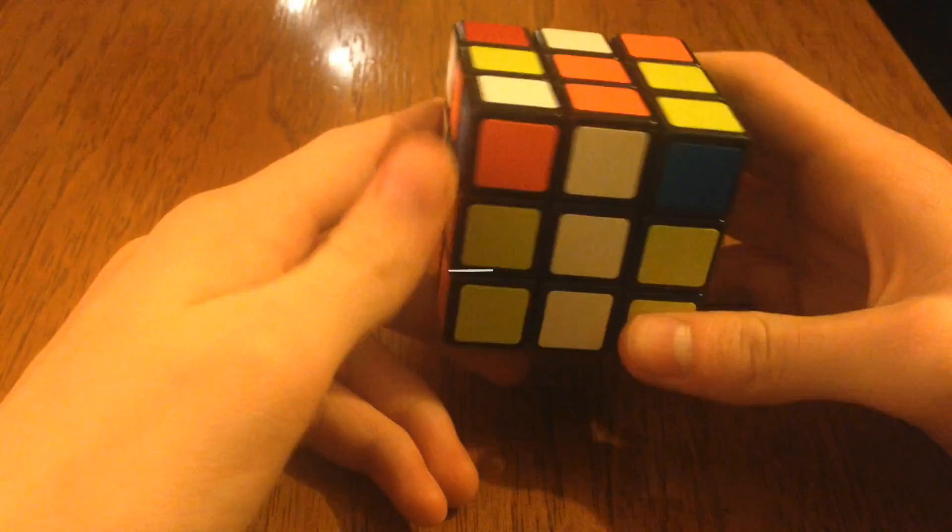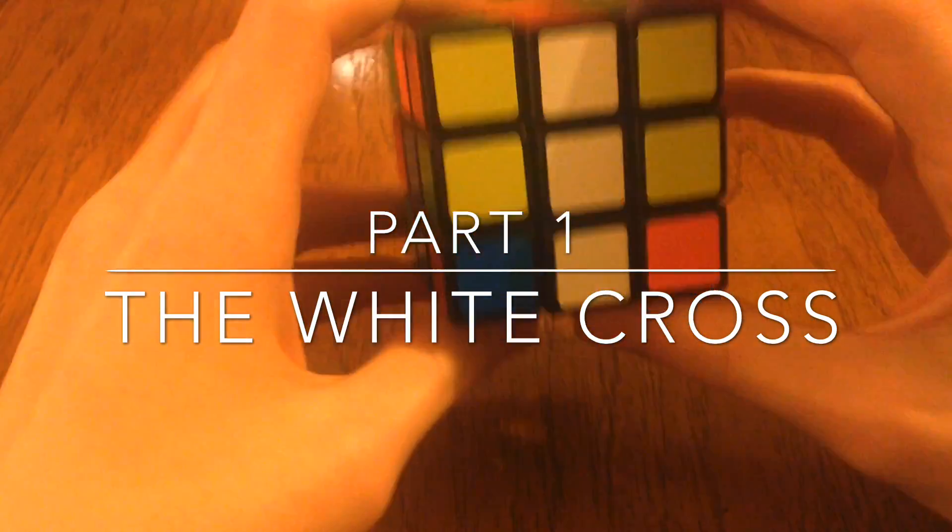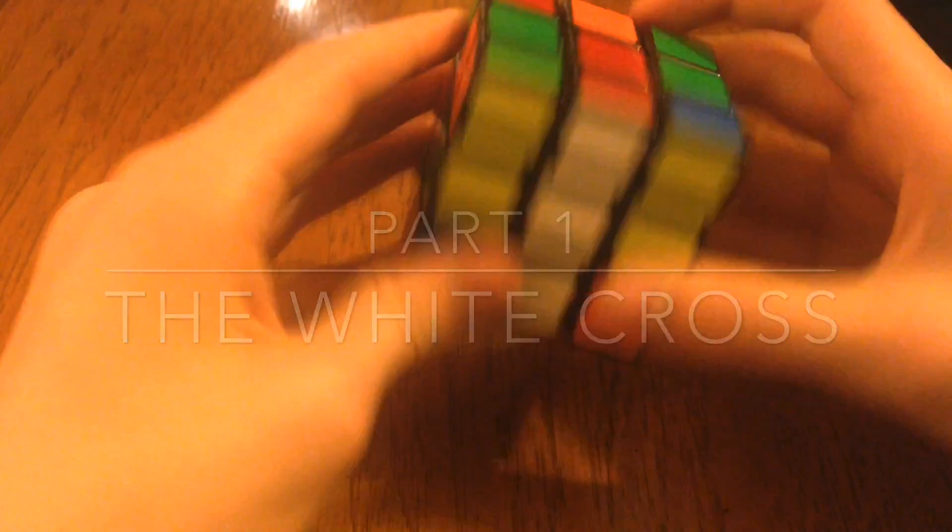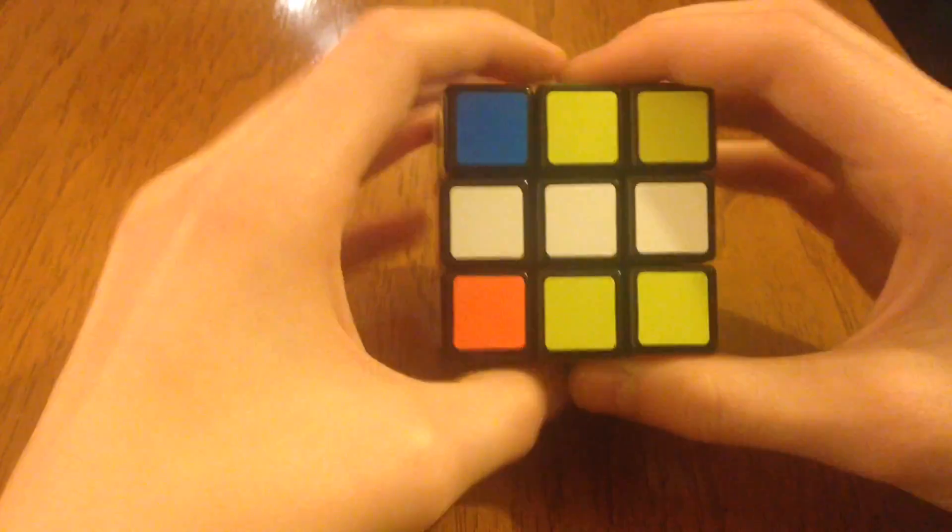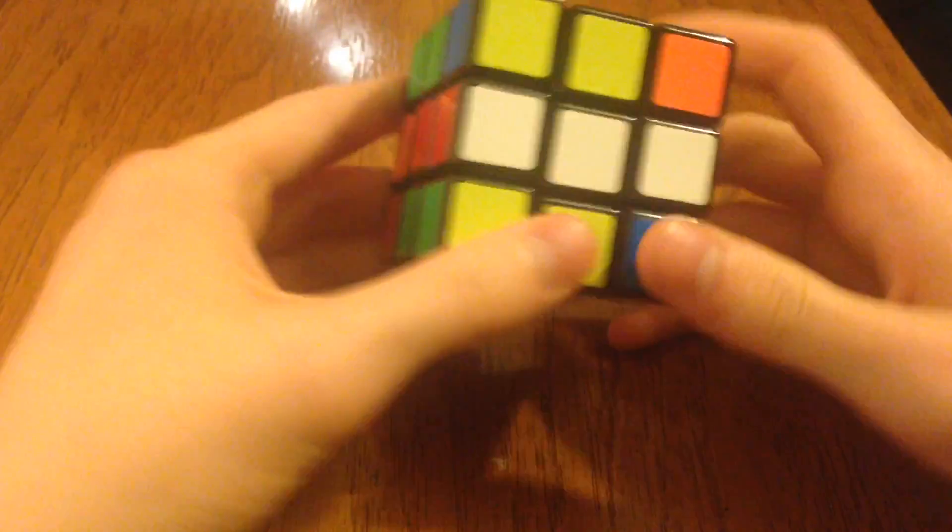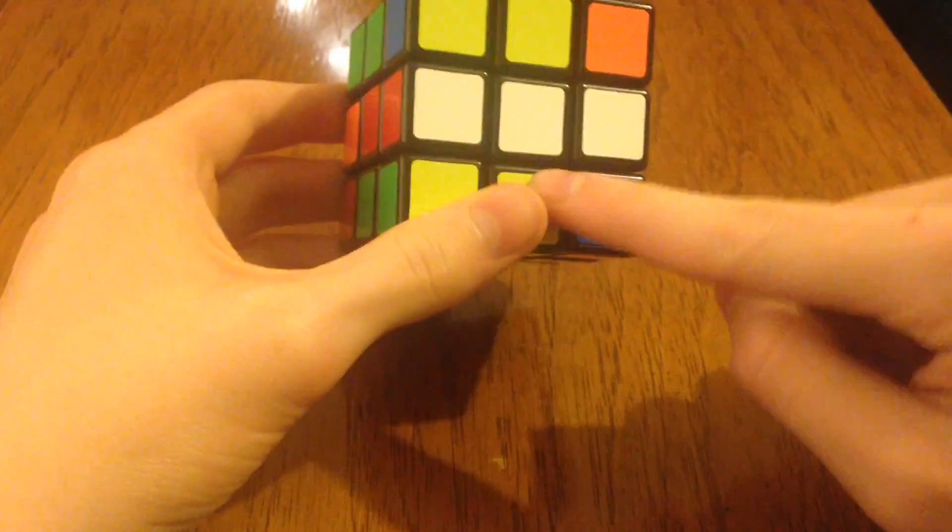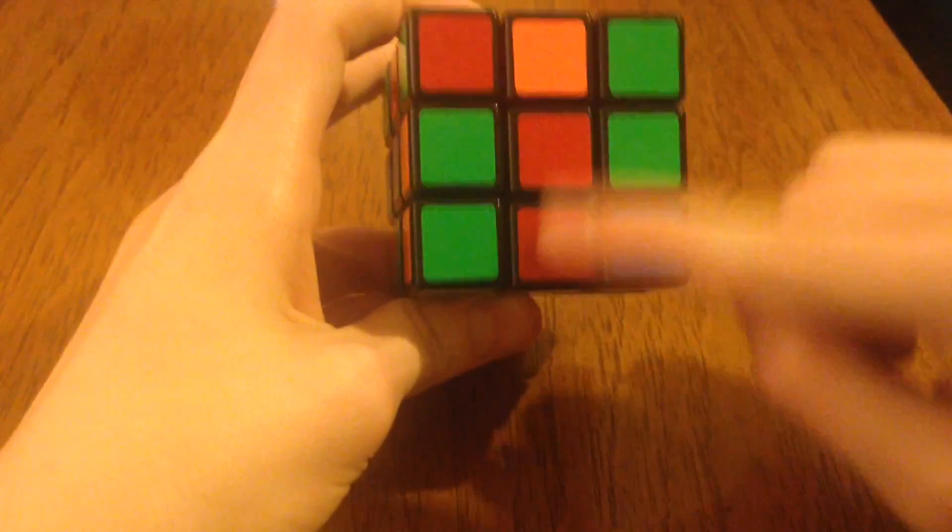So, this is part one, step one. Solving the white cross. So basically, this part requires no rhythms, algorithms, which is another word for a pattern. You don't need to know that. All you're doing is getting four white squares in the shape of a plus sign where these match up.